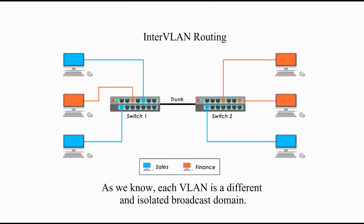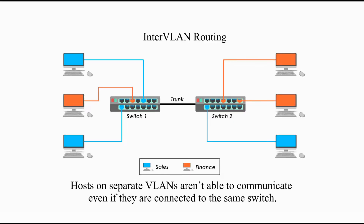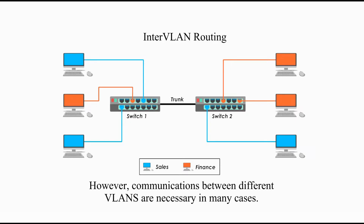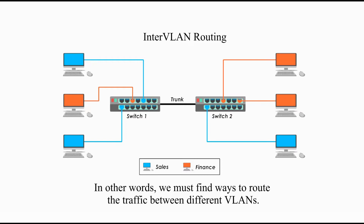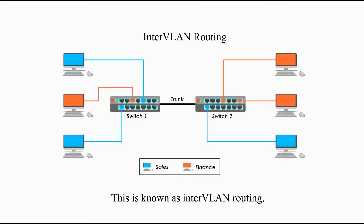As we know, each VLAN is a different and isolated broadcast domain. Hosts on separate VLANs are not able to communicate, even if they are connected to the same switch. However, communications between different VLANs are necessary in many cases. In other words, we must find ways to route the traffic between different VLANs. This is known as inter-VLAN routing.